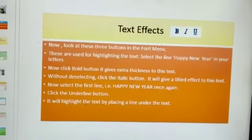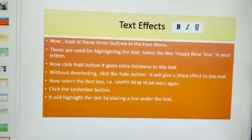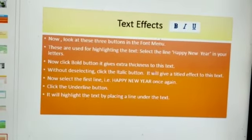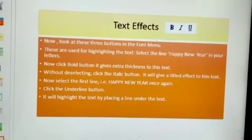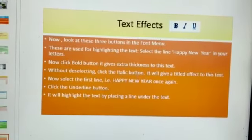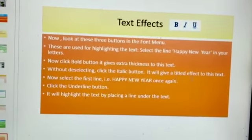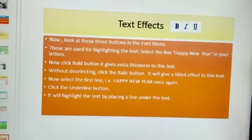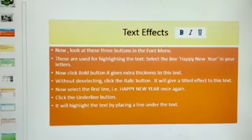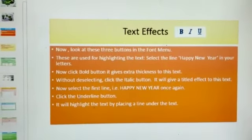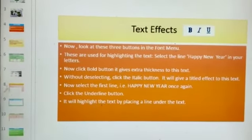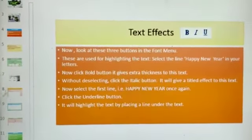Select the line 'Happy New Year' in the letter. Now click the bold button — it gives extra thickness to this text. Without deselecting, click the italic button — it gives an italic effect to this text. Now select the first line 'Happy New Year' once again and click the underline button — it will highlight the text by placing a line under the text.